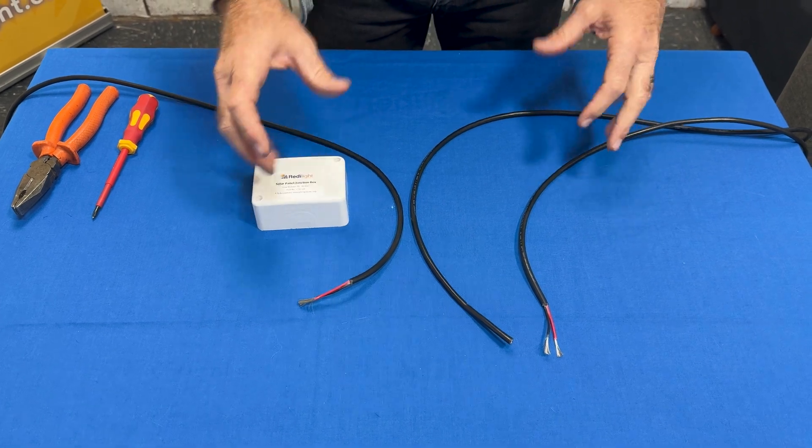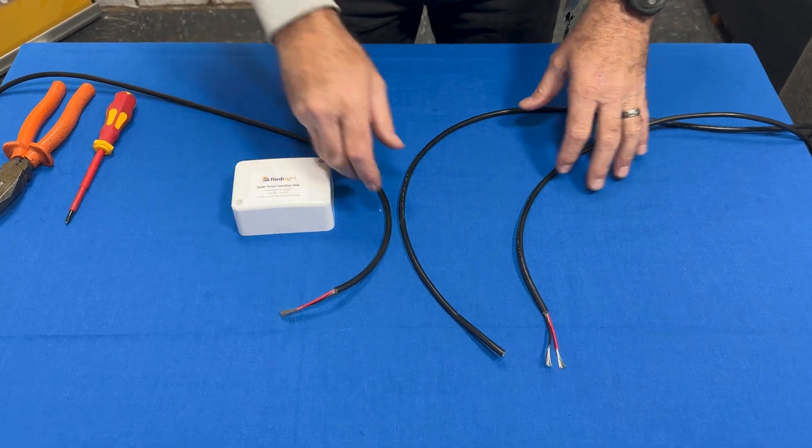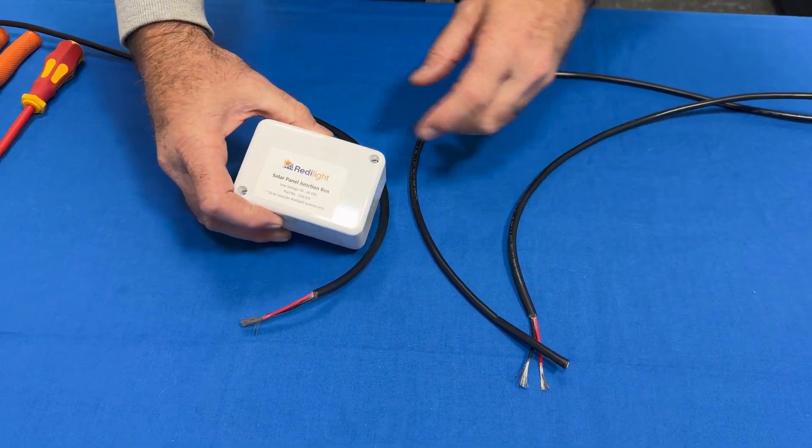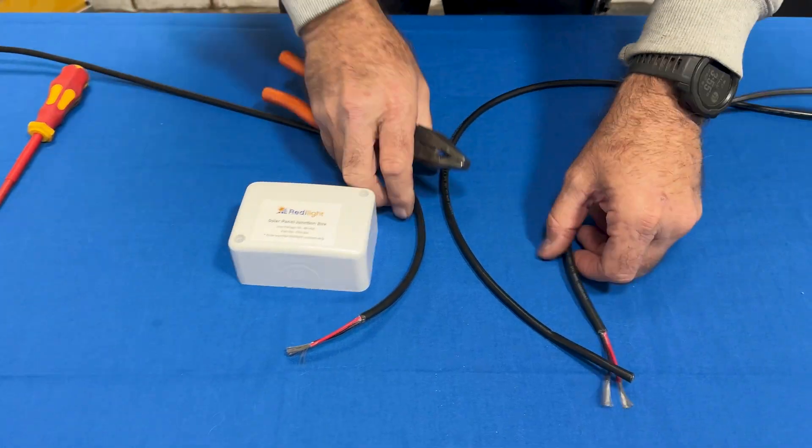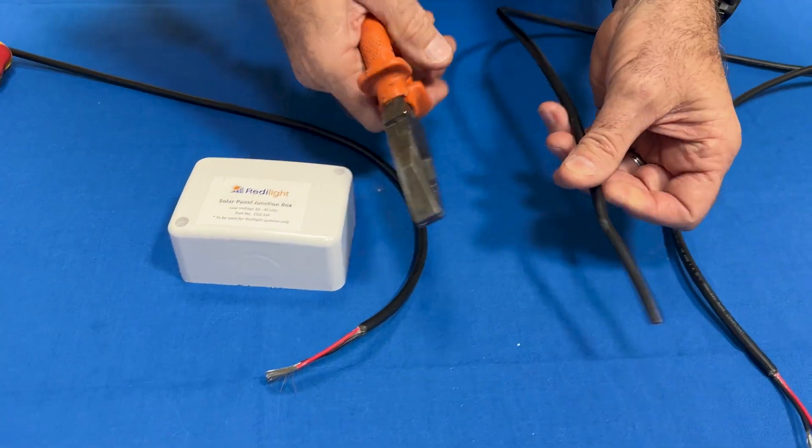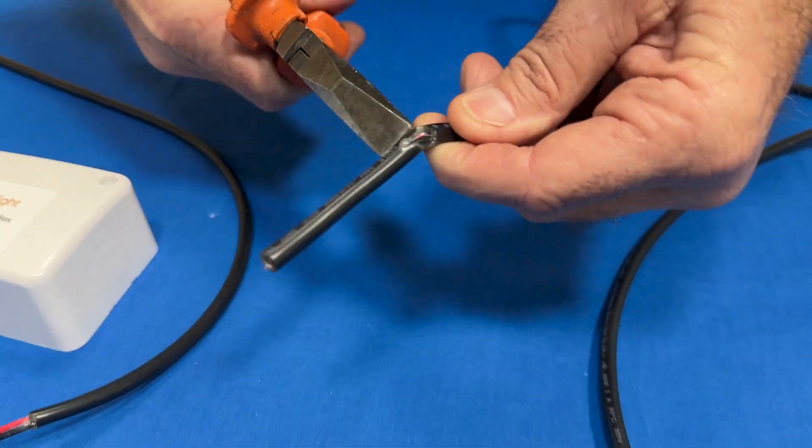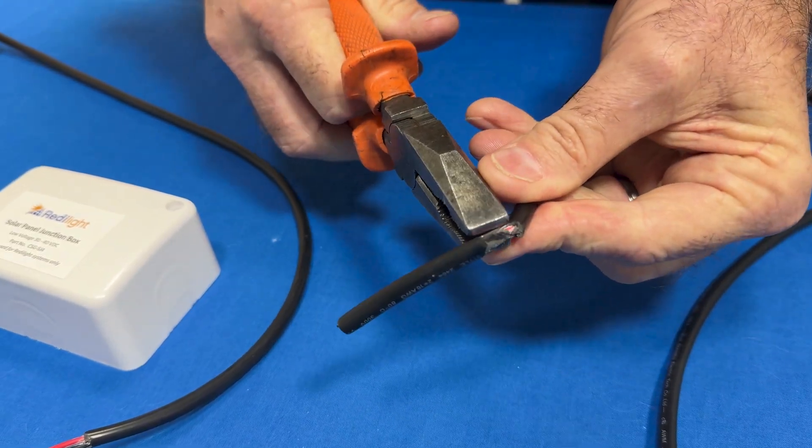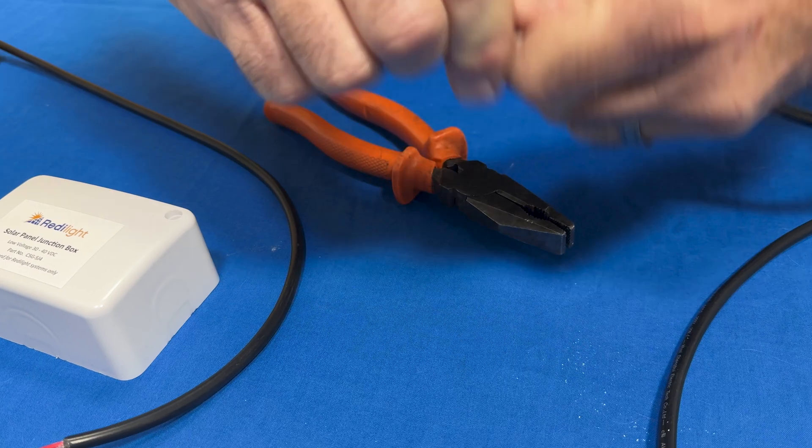Okay, so we're just going to do a brief demonstration of how to join multiple cables using the Ready Light junction box. I've already stripped those two back. Just be careful when you remove this outer sheath that you don't mark these cables.